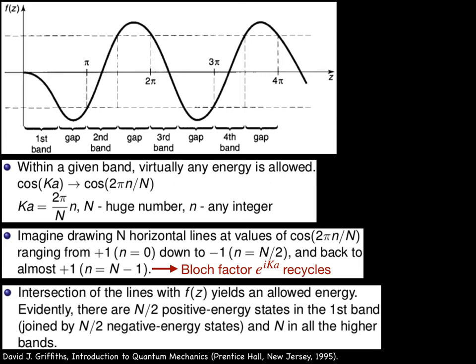Imagine drawing N horizontal lines at values of cos(2πn/N), ranging from positive 1, that's n equals 0, down to negative 1, or n equals N/2, and back to almost positive 1. At this point, the Bloch factor recycles, so no new solutions are generated by further increasing the integer n.